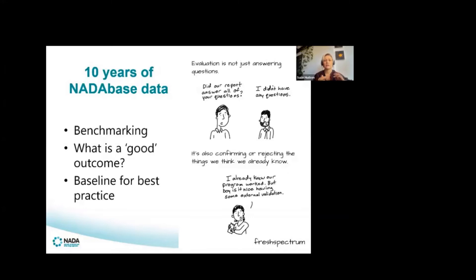Looking at the frequency of drug use, how people are feeling and their general health and wellbeing — whilst all those measures have some way of ascertaining change at an individual level, what we've been less clear about is what makes for a good outcome. Obviously the most important thing is that the person accessing treatment has reached the goals they set for themselves and that we've assisted them. However, people from the community accessing services would like to know that the treatment they're receiving is effective.